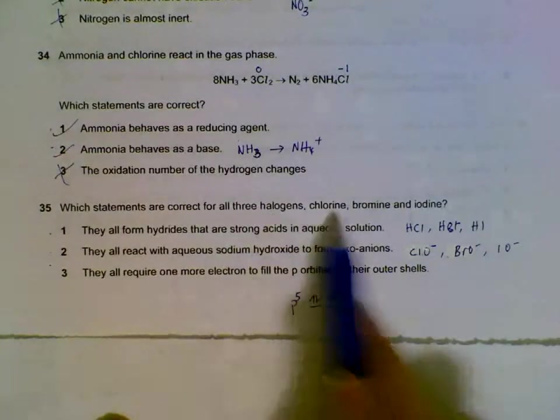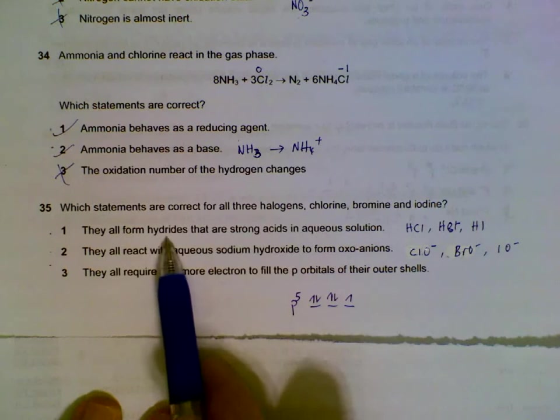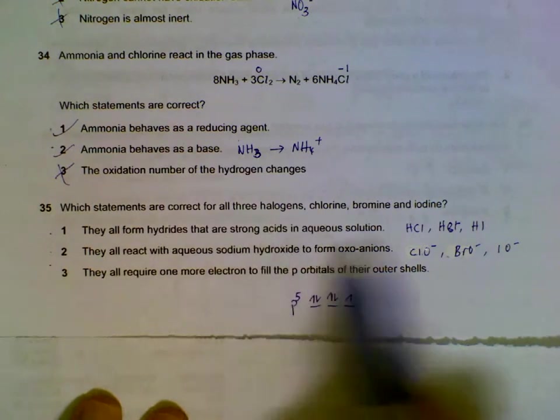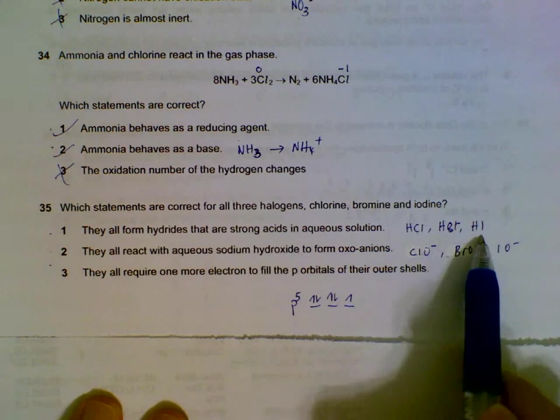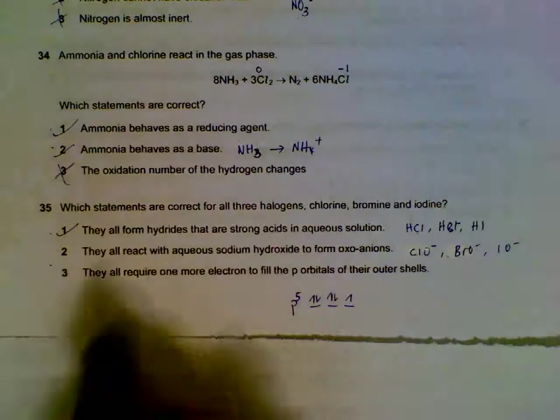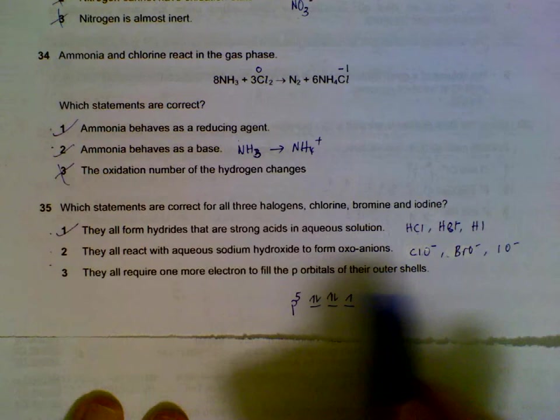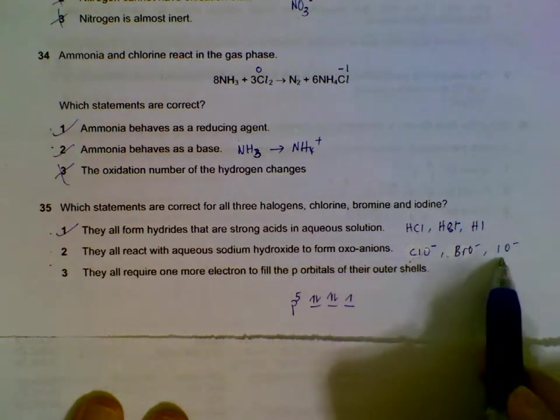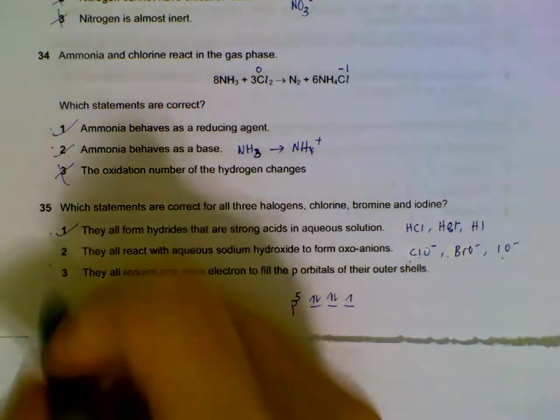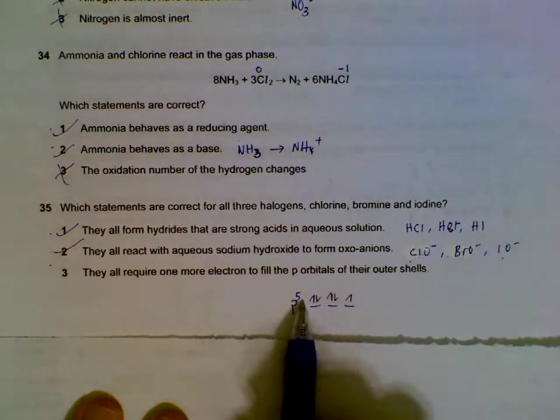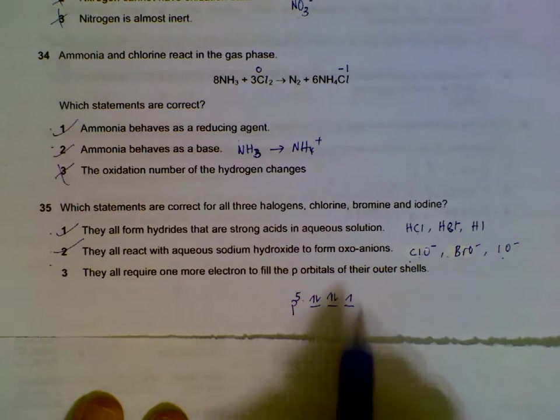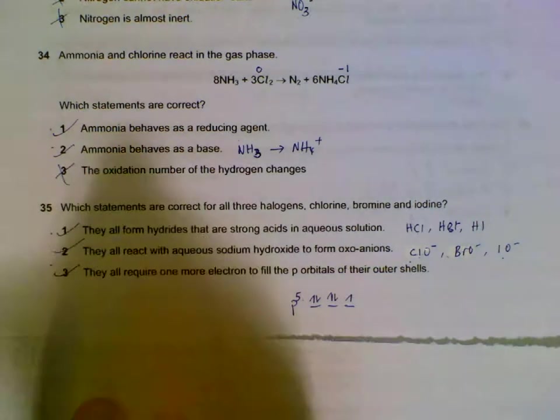Question 35: Halogens—chlorine, bromine, and iodine. They form hydrates that are strong acids: HCl, HBr, and HI are strong acids, so that's true. They react with sodium hydroxide to form halide anions—that is also true. Your halide anions are here. They are all P5 orbitals, so they require one more electron to fill up the P orbitals—that's also true.